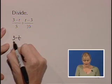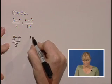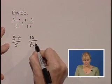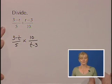We have 3 minus t over 5. We're going to flip or invert this second fraction so that the 10 comes to the numerator and the t minus 3 comes to the denominator, and we're going to change our operation to multiplication.